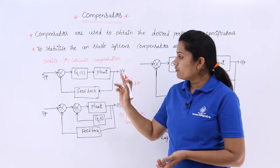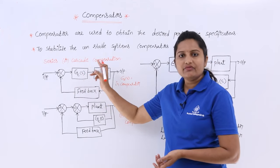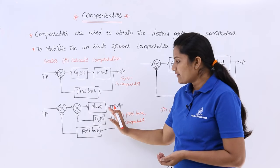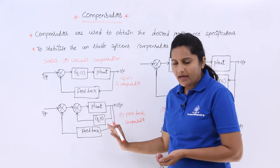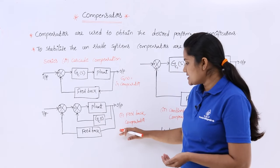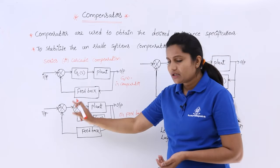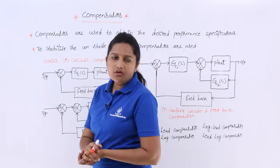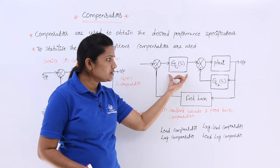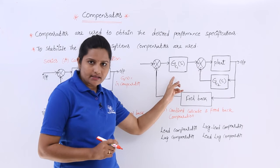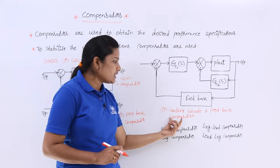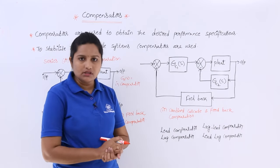This is the cascade compensation network. Whenever your compensator is in cascade with your regular gain, that is called a cascade compensator or series compensator. Whenever you have the compensator in feedback with the regular gain, then we say this is a feedback compensator. Here we are using two compensators — one in the cascade network and one in the feedback network. This total control system is called a combined cascade and feedback compensation control system.